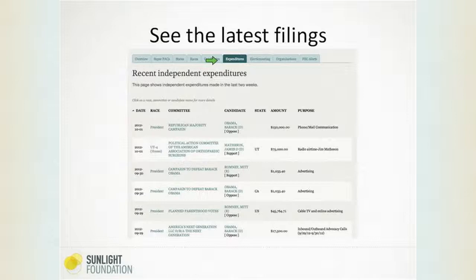Another tab, labeled 'expenditures,' lets you see the latest expenditures we've just pulled in over the last couple of hours. The scraper runs frequently throughout the day. This shows you what's being spent — it doesn't necessarily mean an ad is airing that day, but it shows you when they're reporting expenditures to the Federal Election Commission. You can see all the different activity going on, so this is a good way to follow the latest activity.